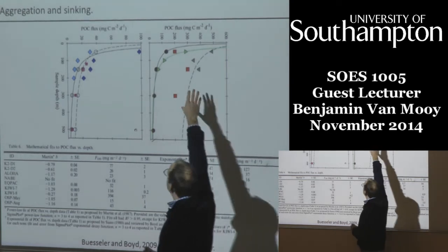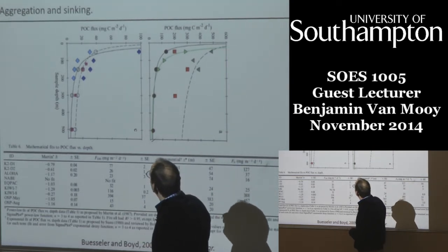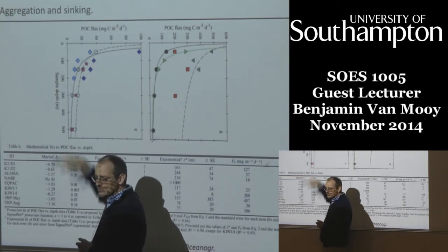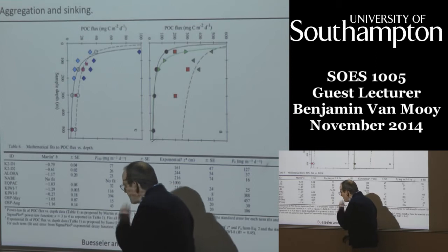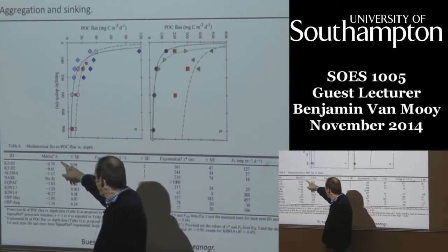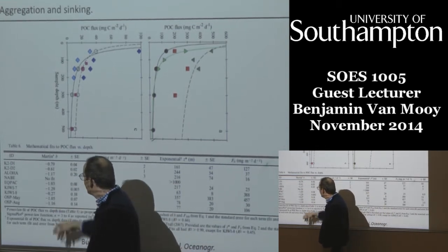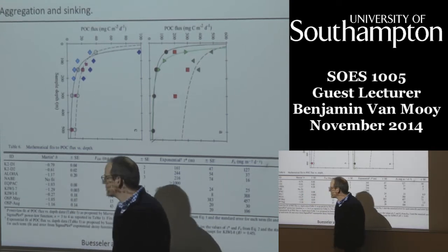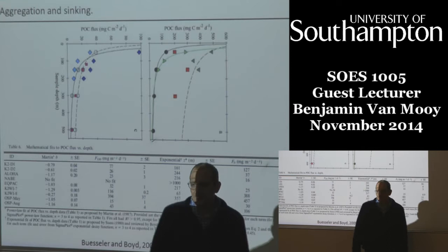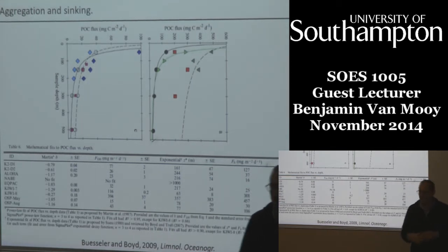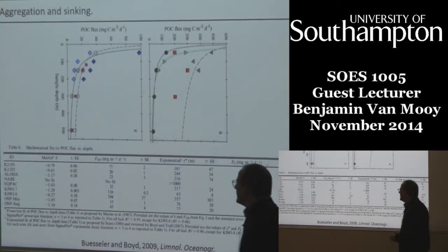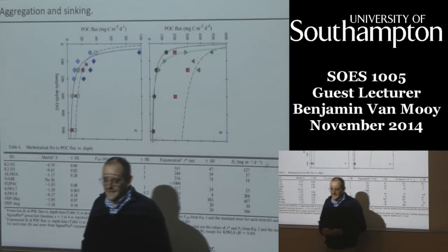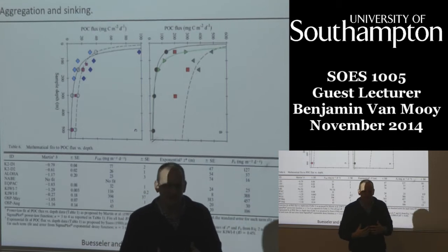These are actual flux data from just one study, on the same axes going down to 500 meters. The variation in the B values is almost two orders of magnitude. There's a lot of variability in B. People have tried to figure out what causes this variability — and that's kind of where my research comes in.